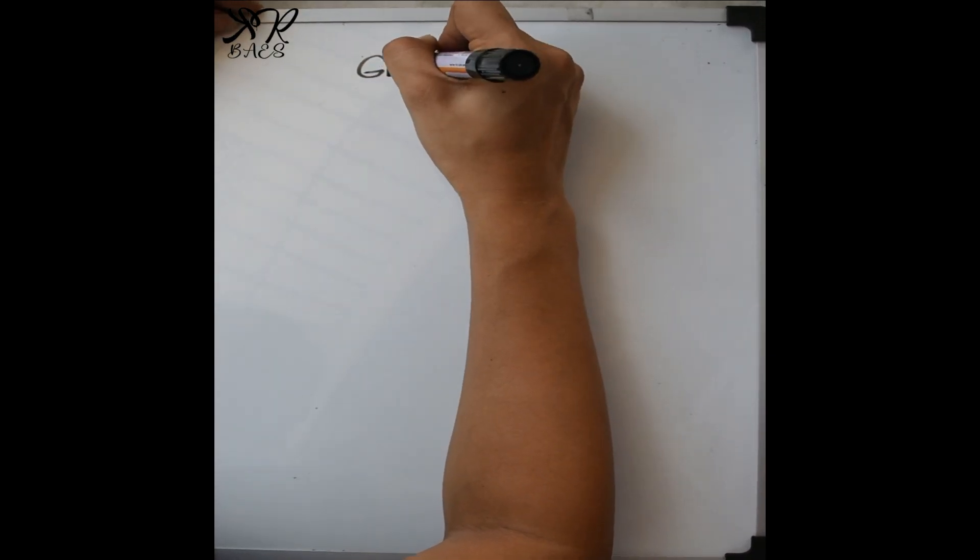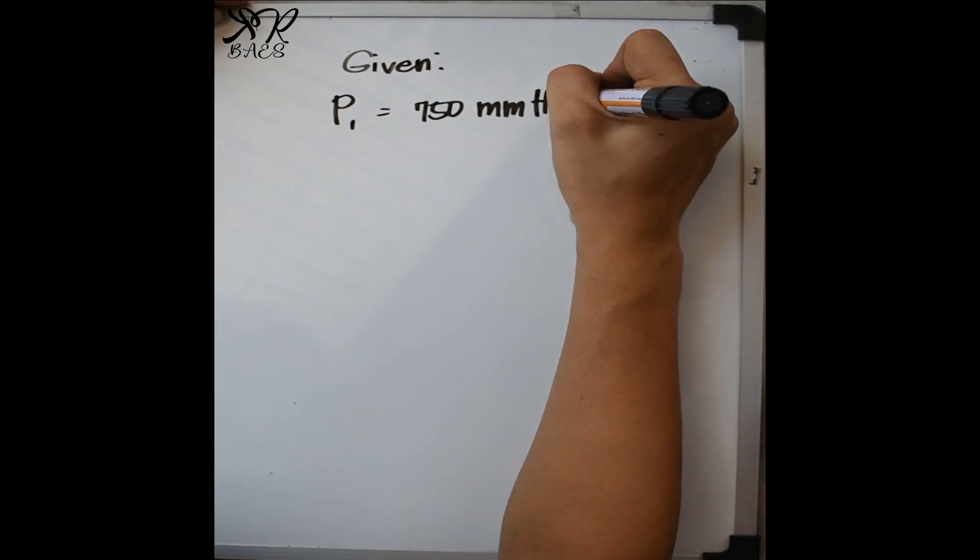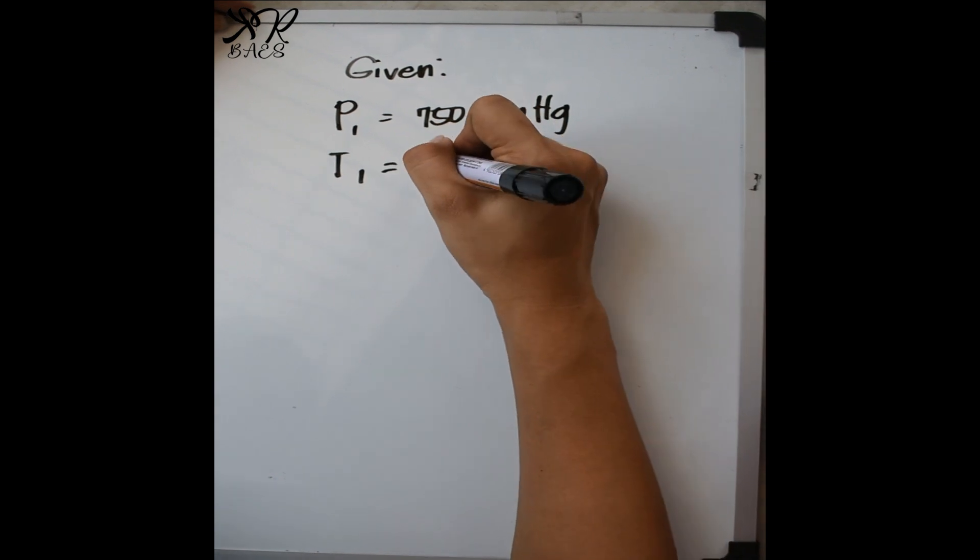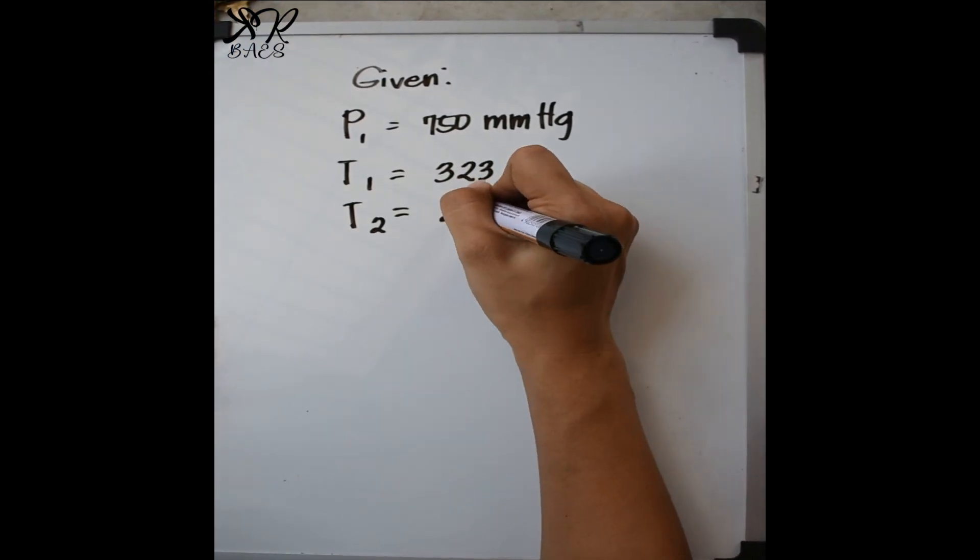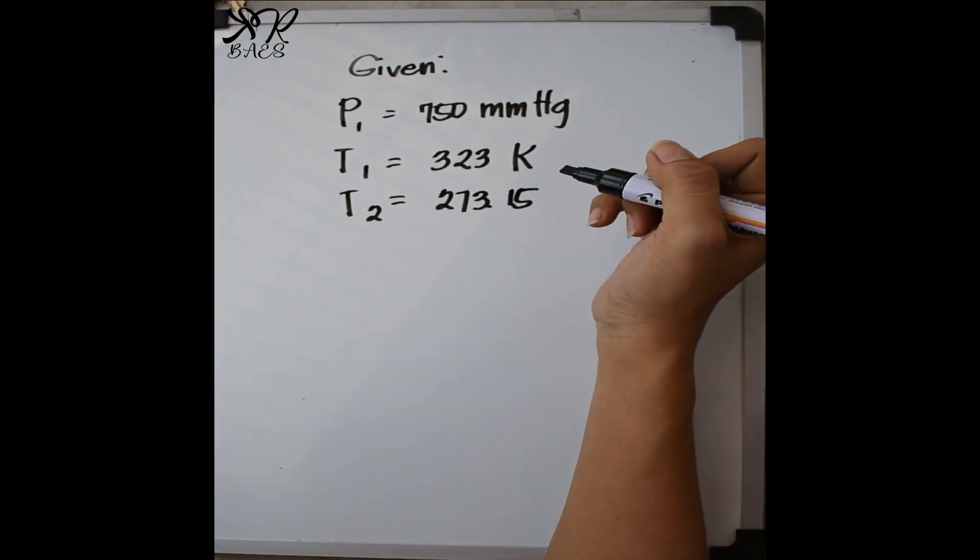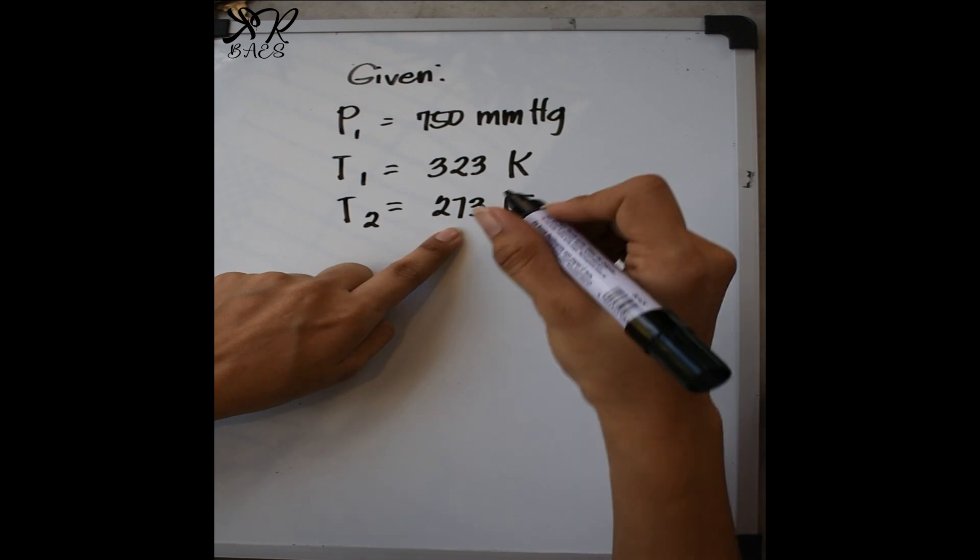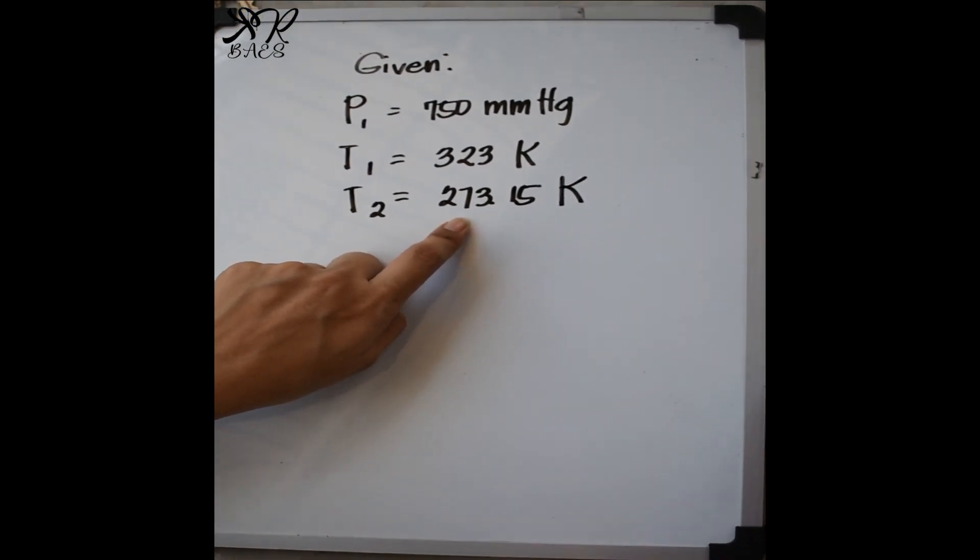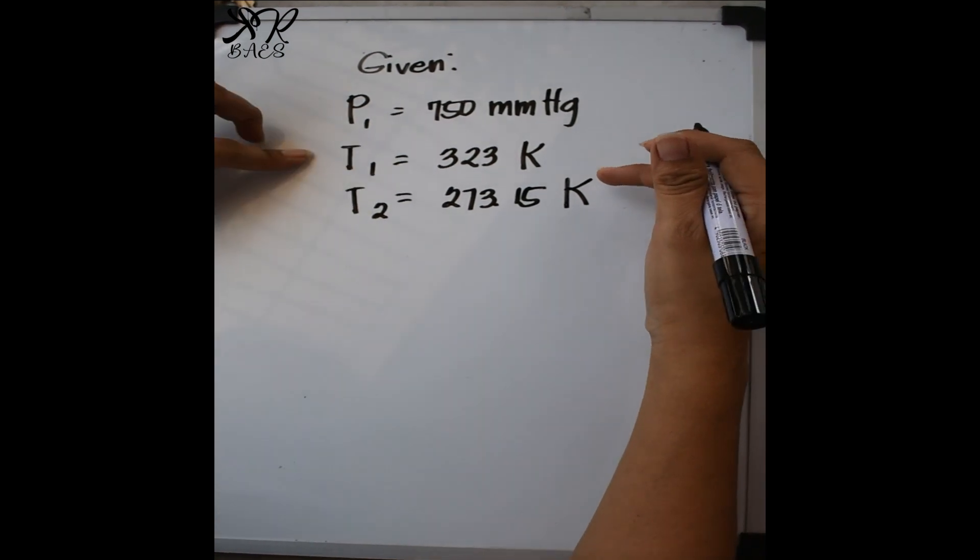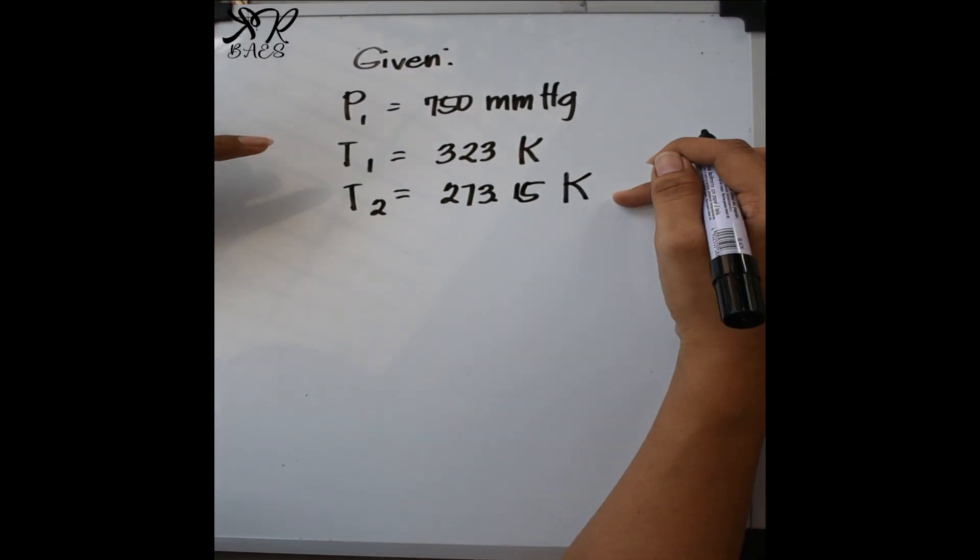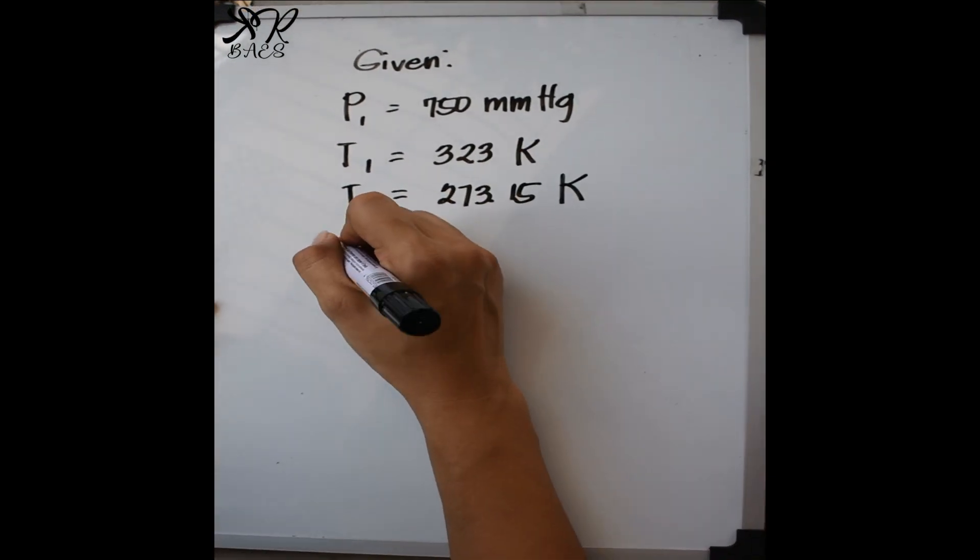So, these are the given. You have the P sub 1 is equal to 750 millimeters of mercury. The initial temperature is 323 Kelvin and the final temperature is 273.15 Kelvin because as I have already told you that we have the standard temperature and pressure and the standard temperature is 273.15 Kelvin or 0 degrees Celsius or 32 degrees Fahrenheit. So, because the given initial temperature is 323, then we are going to get the standard temperature in Kelvin. So, we are looking for the final pressure.